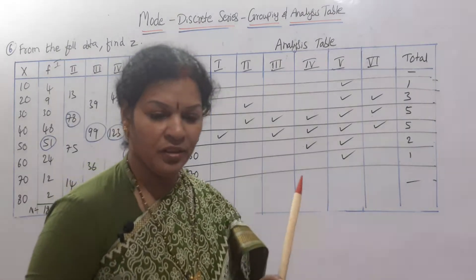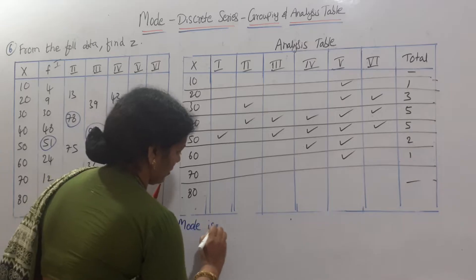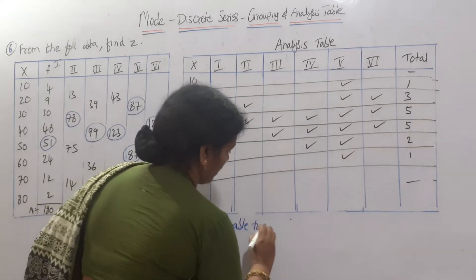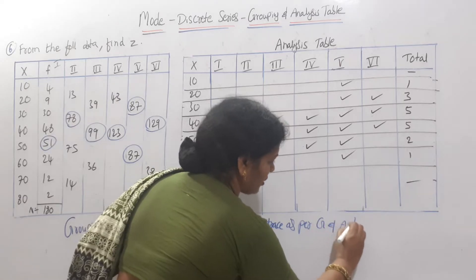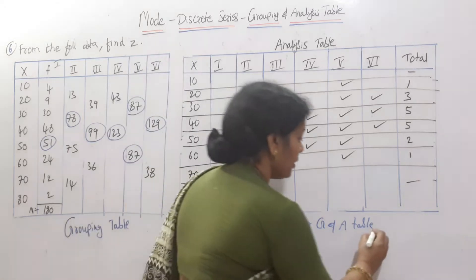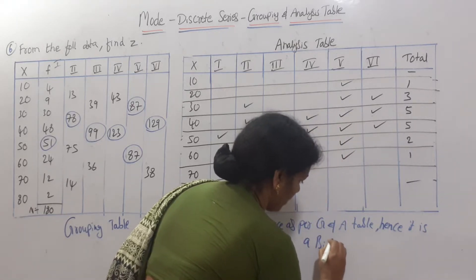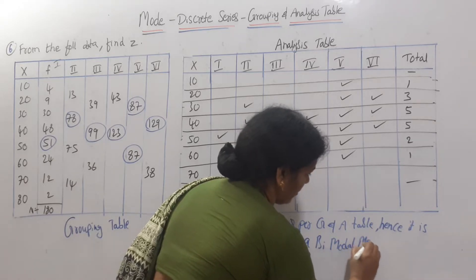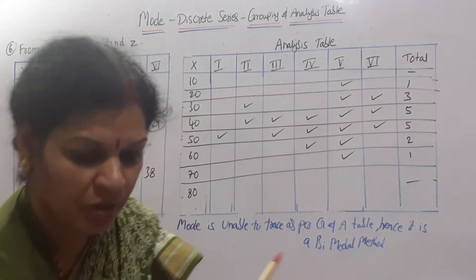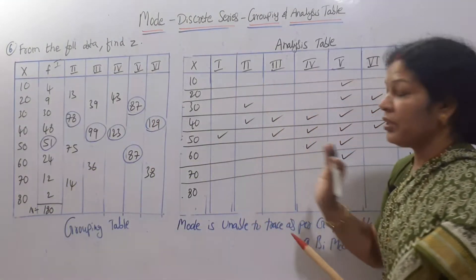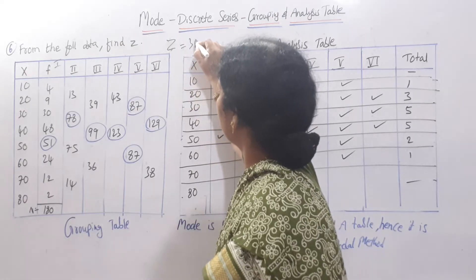We can write one sentence here. Mode is unable to trace as per the grouping and analysis table. Hence it is a bimodal method. Bimodal method means we have to use one formula. Mode is equal to, or z is equal to, 3 median minus 2 mean.